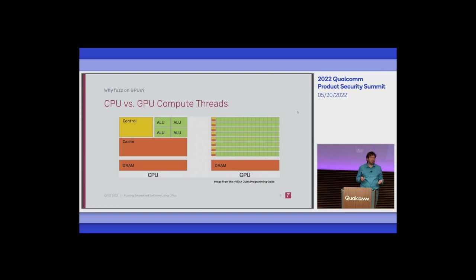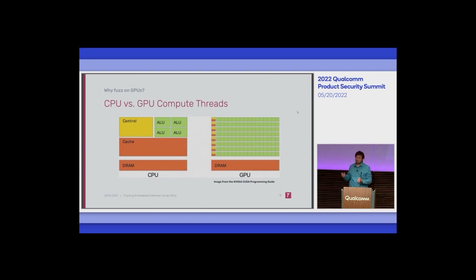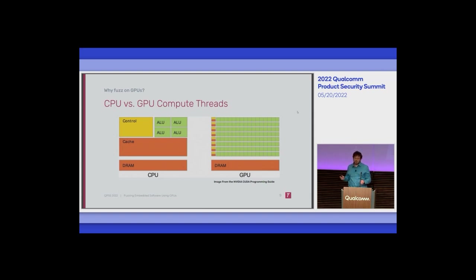Whereas a CPU takes its big transistor budget and spends it on very complex circuitry — a big MMU, lots of cache, a very complex memory hierarchy, speculative execution tricks, branch prediction — a GPU doesn't do that. They take the transistor budget and dedicate it to an enormous number of very simple execution cores, letting the programmer handle the complex memory hierarchy details instead of dedicating silicon to it.